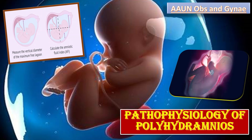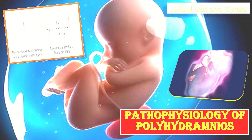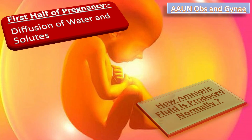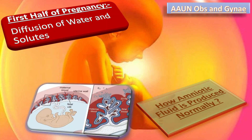If you want to watch more videos about polyhydramnios, go to the links in the i button in the top right corner of this video. How is amniotic fluid formed normally? In the first half of pregnancy, amniotic fluid is derived from fetal and possibly maternal compartments by diffusion of water and solutes. Water and solutes freely cross the fetal skin and may diffuse through the amnion and chorion as well. The amniotic fluid in early gestation is a dialysate that is identical to the fetal and maternal plasma but with a lower protein concentration.